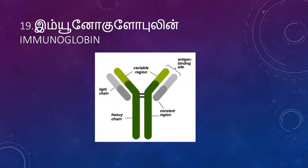Then, structure of immunoglobulin or antibody. The antibody acts as agglutinin or precipitin against the pathogen. Lymphocytes produce the antibody or immunoglobulin. Immunoglobulin is made up of four polypeptide chains: two long heavy chains with molecular weight 50,000 daltons, and two short light chains with molecular weight 25,000 daltons. It has a constant region and a variable region.